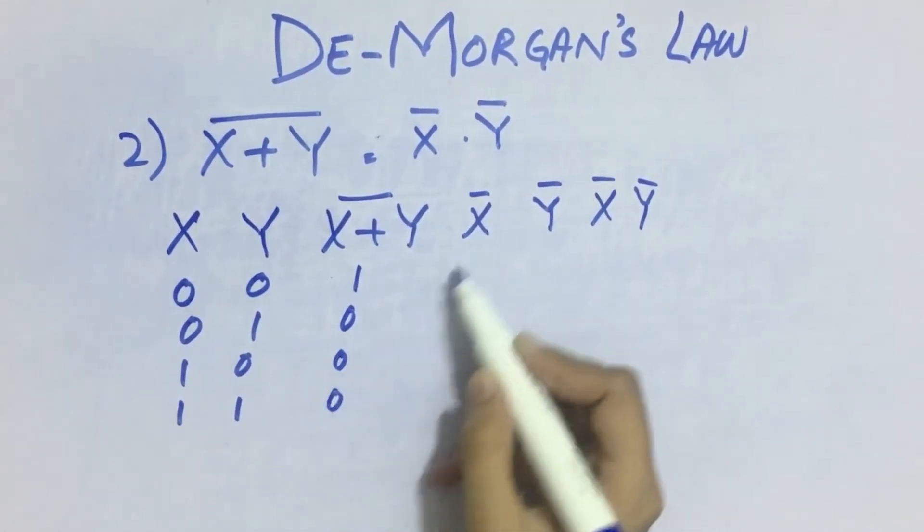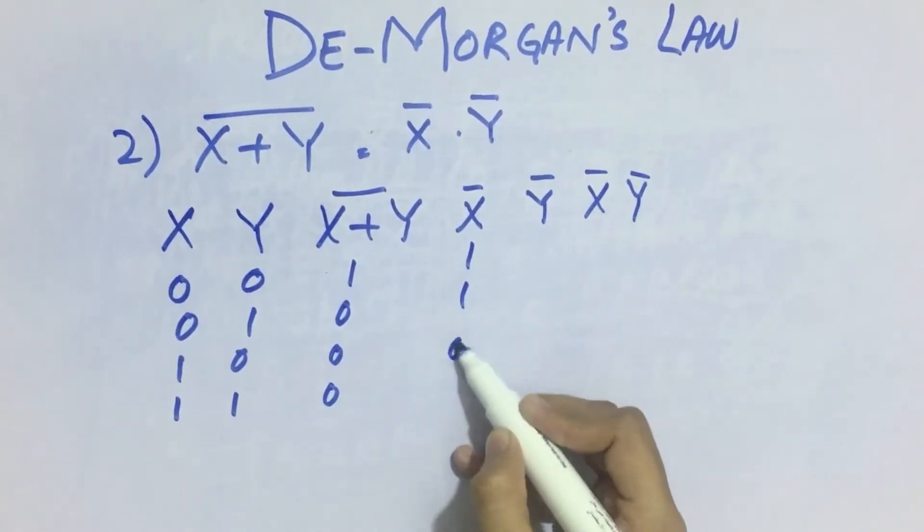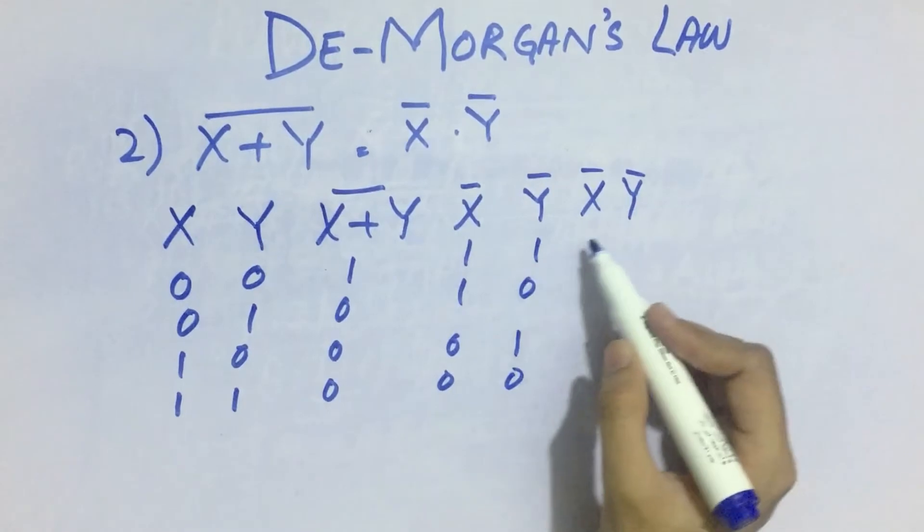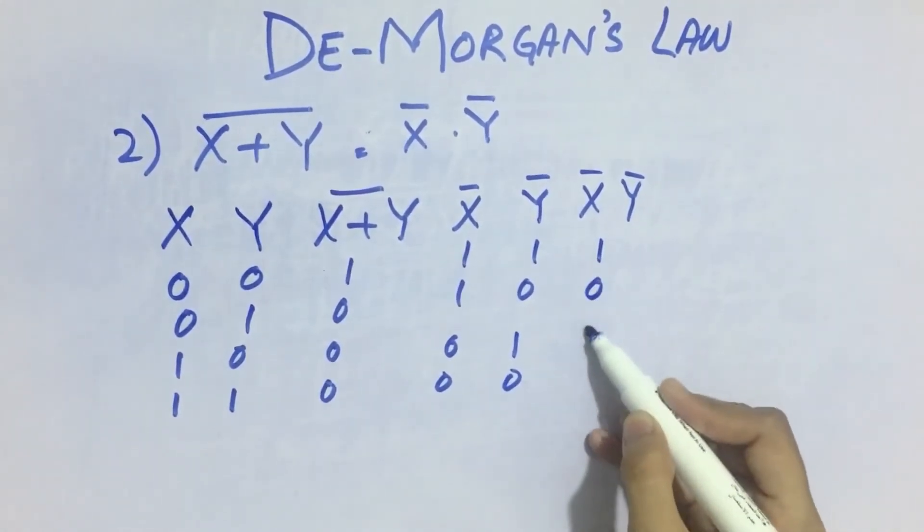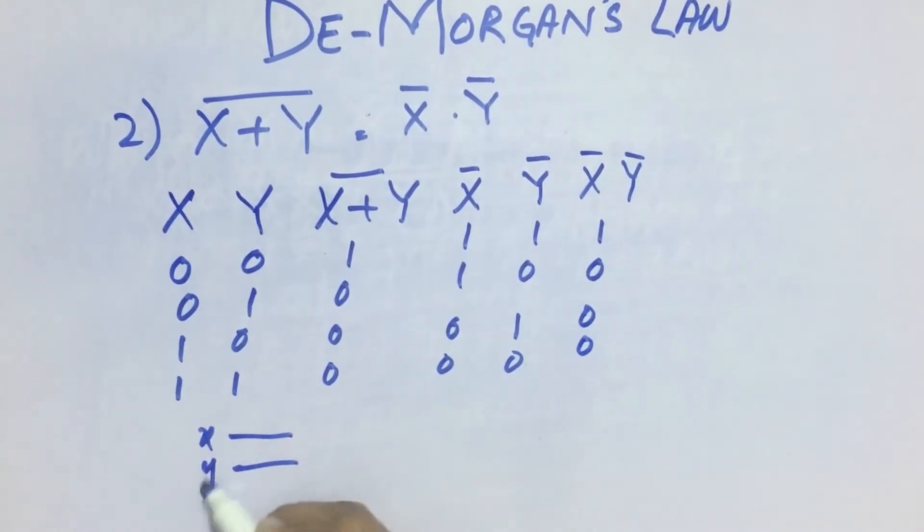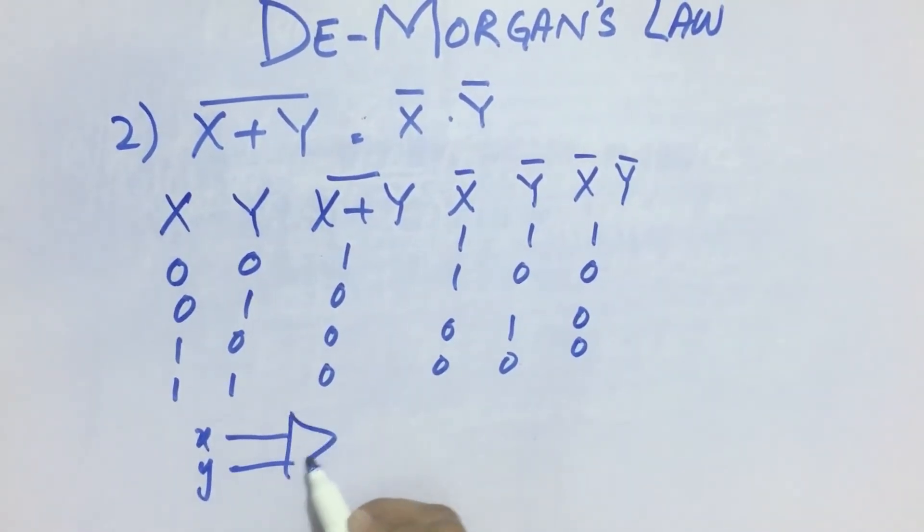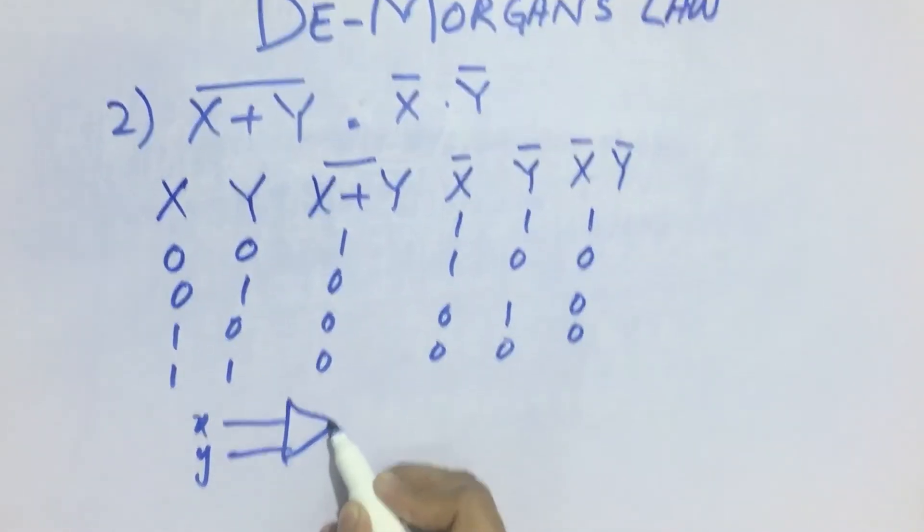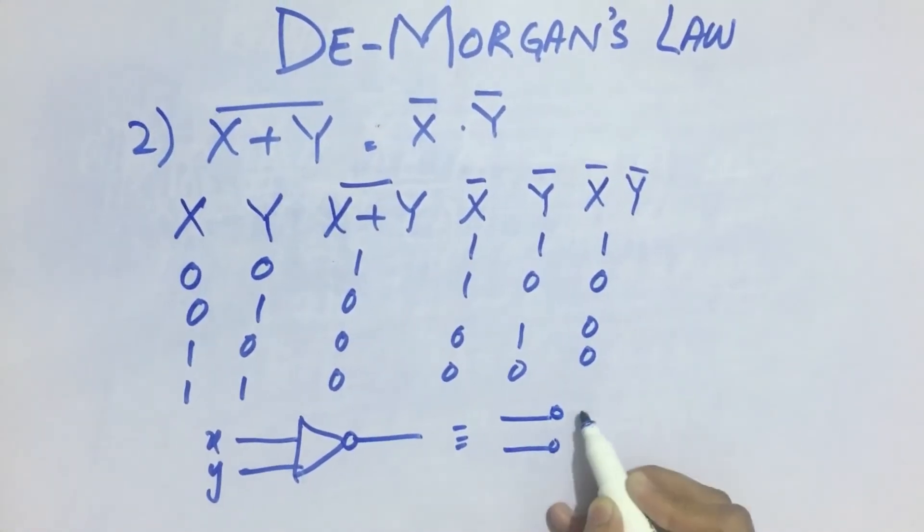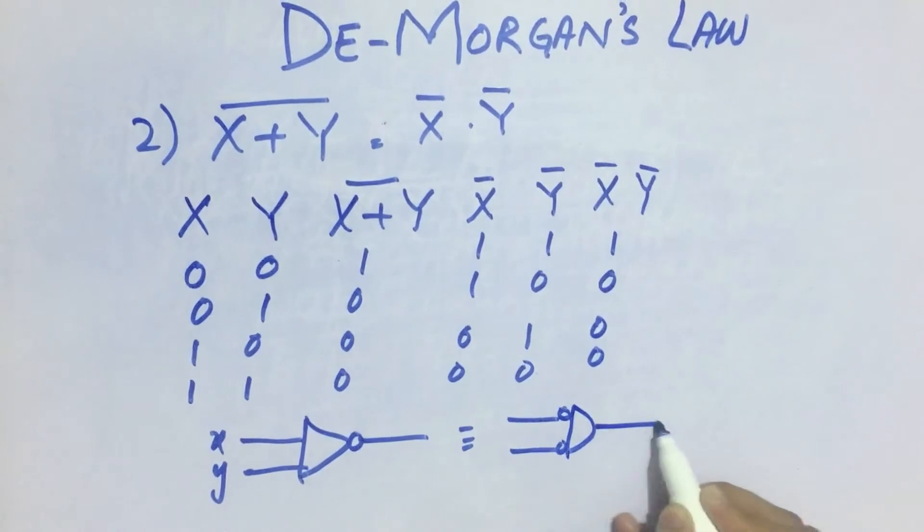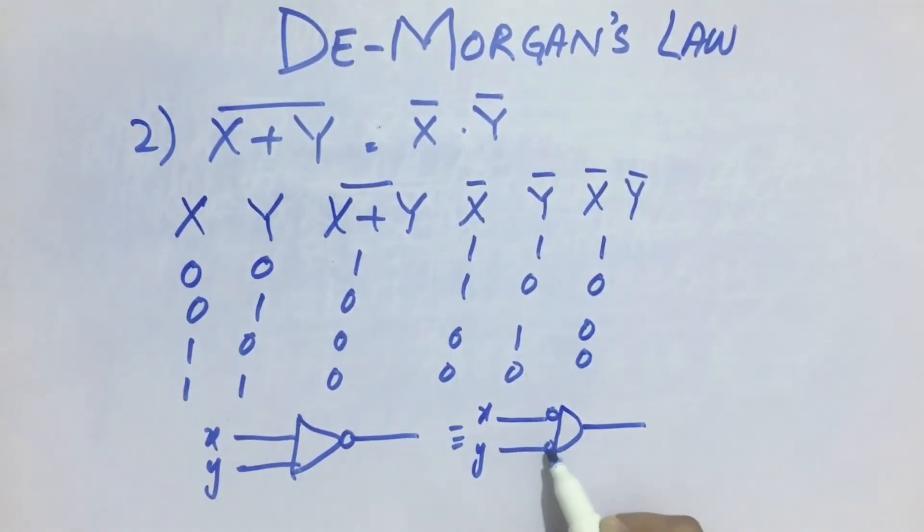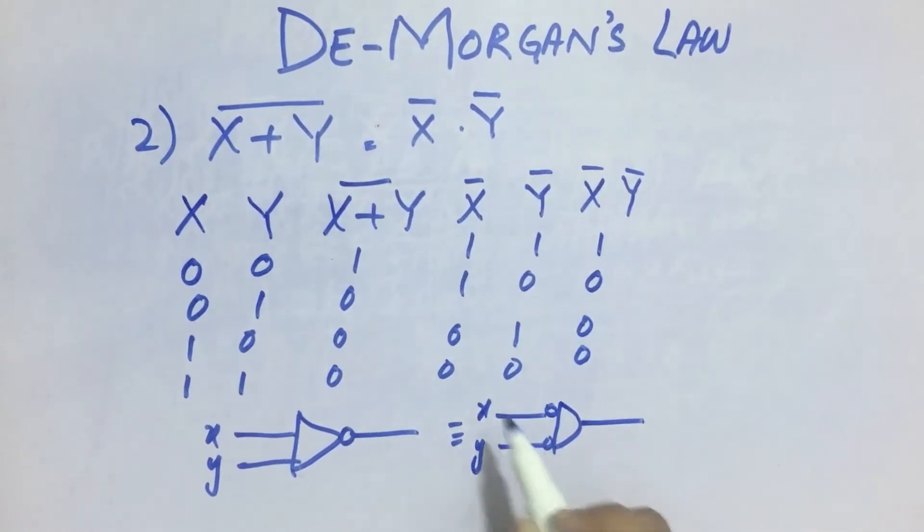x bar will give 1, 1, 0, 0 and y bar will give 1, 0, 1, 0. And the multiplication of both of these will give 1, 0, 0, 0. So in this way, x plus y whole bar is equivalent to x bar and y bar. So this is x, y, the not of x, not of y and the and. So this is equivalent to this.